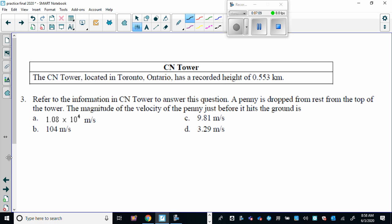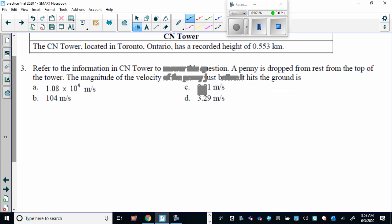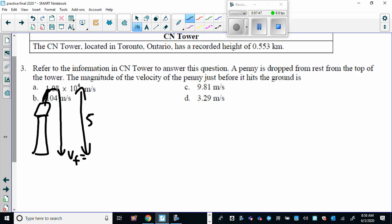All right, on to number three. Another kinematics question. The CN Tower located in Toronto, Ontario, has a recorded height of 0.553 kilometers. A penny is dropped from rest from the top of the tower. The magnitude of the velocity of the penny just before it hits the ground. So here's the CN Tower. You drop it all the way to the bottom. We want to know the final velocity right before it hits the ground, and it is going to end up falling a distance of 553 meters, which is 0.553 kilometers. So let's write down what we have. Let's write down what we need. Pick a formula and away we go.